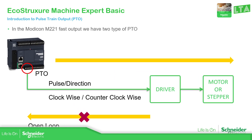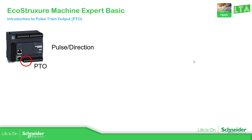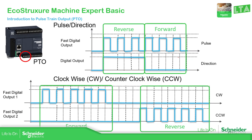The PTO that we have on the Modicon M221 has two types of configurations: pulse-direction and clockwise/counter-clockwise. For the pulse-direction configuration, the M221 requires one fast output to create the high-frequency pulses and then a normal output. This normal output is in charge of defining the direction.